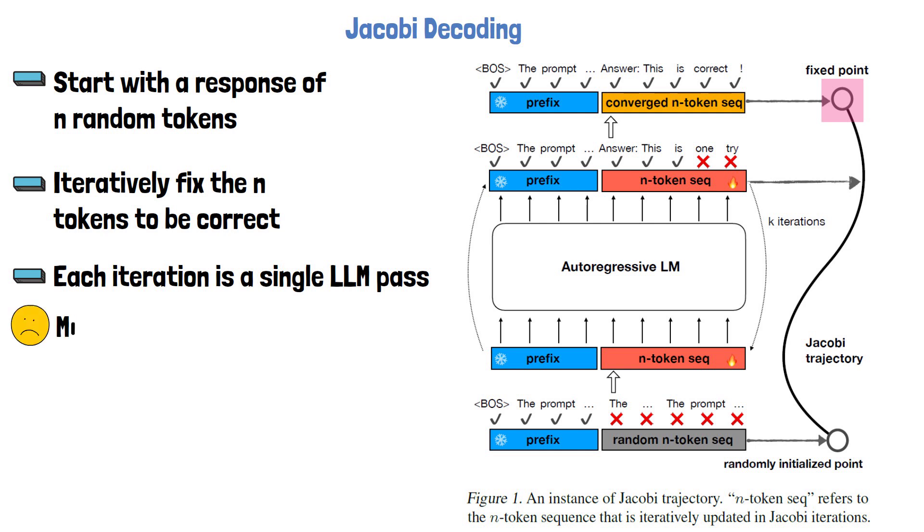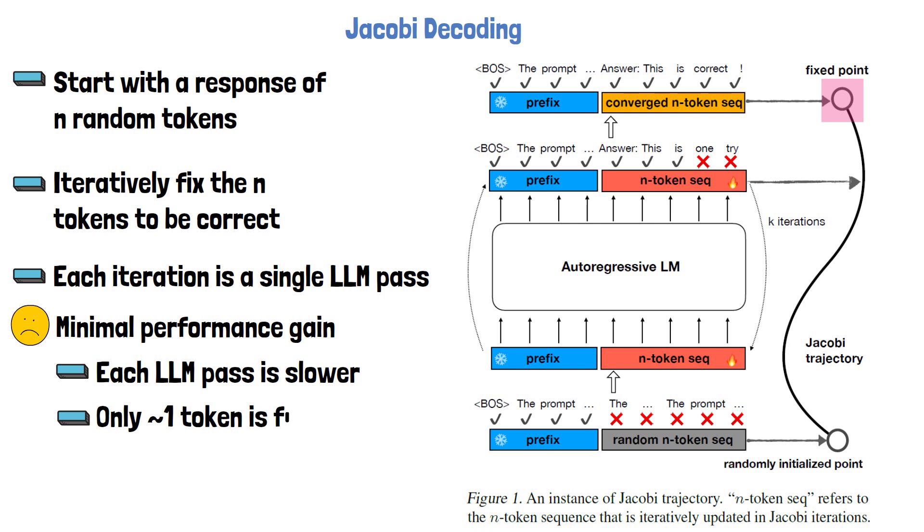However, in practice this approach does not significantly improve the latency, and there are two reasons for that. One is that in each iteration each LLM pass is slower, since we process also the response sequence tokens in each iteration. Second is that the LLM is usually able to fix only one token from the response sequence, or a bit more on average. Stay tuned until the end to understand how this method is dramatically improved with CLLMs.